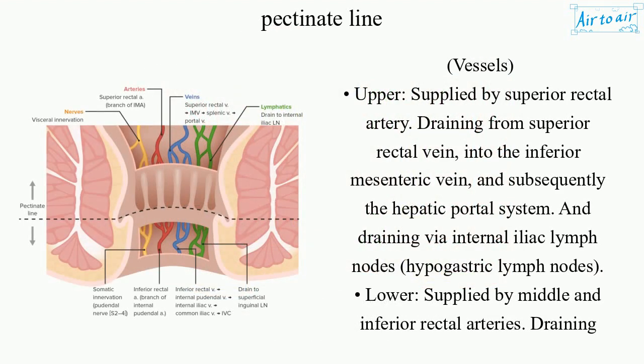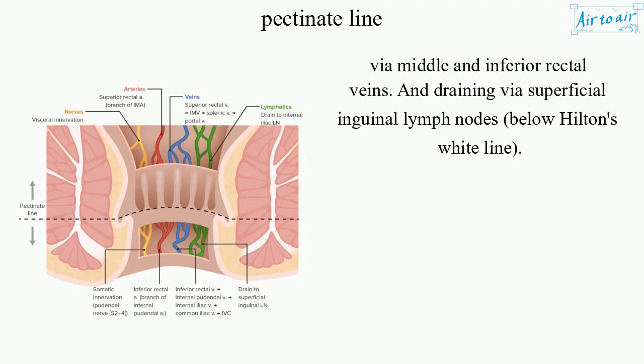Vessels: Upper — supplied by the superior rectal artery, draining via the superior rectal vein into the inferior mesenteric vein and subsequently the hepatic portal system. Lymphatics drain via internal iliac and hypogastric lymph nodes. Lower — supplied by the middle and inferior rectal arteries, draining via the middle and inferior rectal veins, and lymphatics drain via the superficial inguinal lymph nodes.